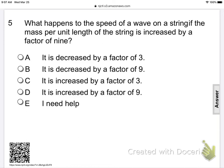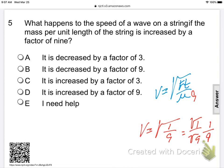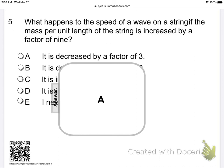What happens to the speed of a wave if the mass per unit of the length of the string is increased by a factor of 9? We have velocity equals tension over linear mass. The linear mass density is now increasing by a factor of 9. So velocity is the square root of 1 over the square root of 9, which is equal to 1 over 3. This velocity is decreasing by a factor of 3.